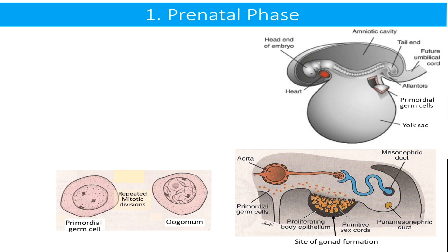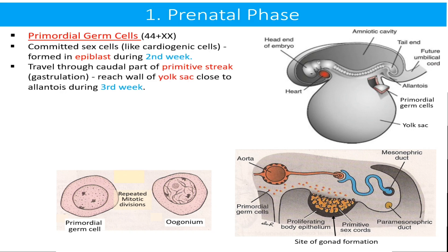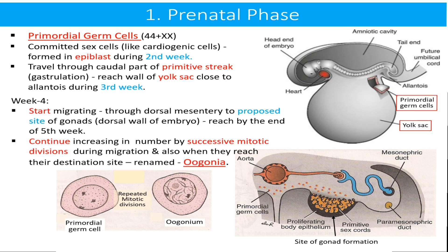We start with the prenatal phase. The primordial germ cells, which are committed sex cells like cardiogenic cells, are formed in the epiblast during the second week of development. They travel through the caudal part of the primitive streak during gastrulation and reach the wall of the yolk sac close to the allantois. During the fourth week they start migrating through the dorsal mesentery to the proposed site of the gonad, that is the dorsal wall of the embryo, reaching there by the end of the fifth week. They continue increasing in number by successive mitotic division during migration and upon reaching their destination, where they are ultimately renamed as oogonia.